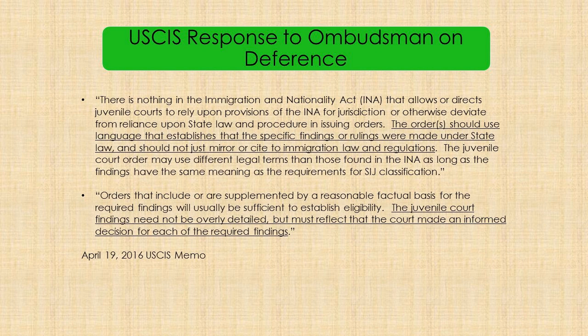I mentioned before the April 19, 2016 response to the ombudsman's recommendation on special immigrant juvenile adjudication prepared and made public by USCIS. In it, USCIS addressed the ombudsman's request that USCIS give deference to state court orders and not revisit the factual findings. Some key sections from the memo: focus on state law — the order should use language establishing that specific findings or rulings were made under state law and should not mirror or cite immigration law and regulations. The juvenile court order may use different legal terms than those found in the INA, as long as the findings have the same meaning as the requirements for SIJ classification. Make sure your order provides the factual basis for each finding — the juvenile court findings need not be overly detailed, but must reflect that the court made an informed decision for each of the required findings.